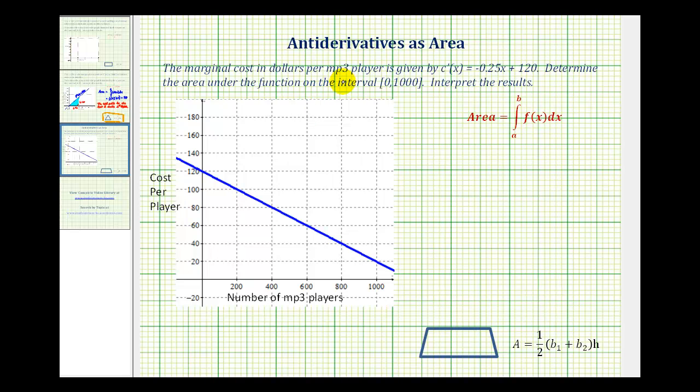The marginal cost in dollars per mp3 player is given by c prime of x equals negative 0.25x plus 120. Determine the area under the function on the closed interval from zero to 1,000, and then interpret the results.